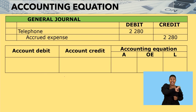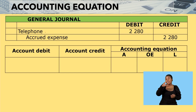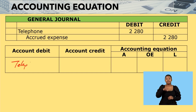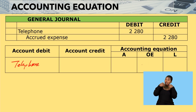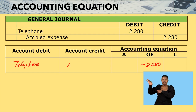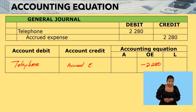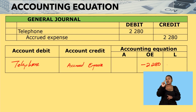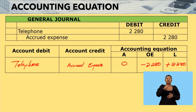Now for the accounting equation. Which account did we debit? We debited telephone — this is an expense, so we come to owners' equity and decrease it by minus $2,280. We credited accrued expense, and since an accrued expense is a liability, our liabilities increase by plus $2,280. This has no effect on assets. That wraps up this lesson — let us go for a break and I'll see you shortly.